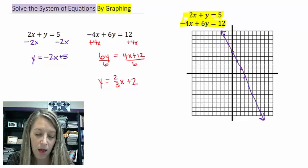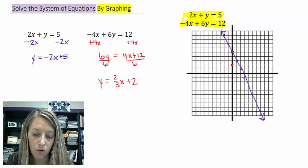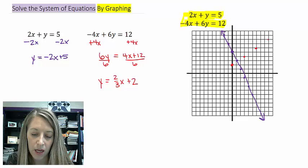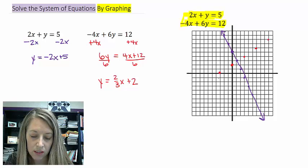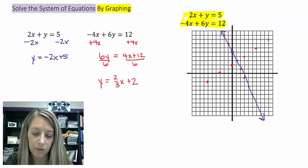In the red, same thing, my y variable is 2, and my slope is 2 thirds, so I go up 2 over 3. And again, I can do that as many times as I need to in either direction, so I can get an image of this line.